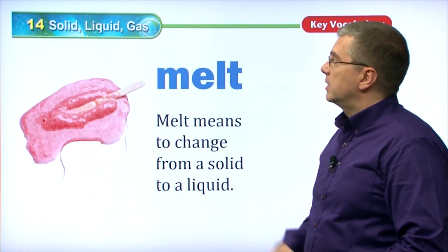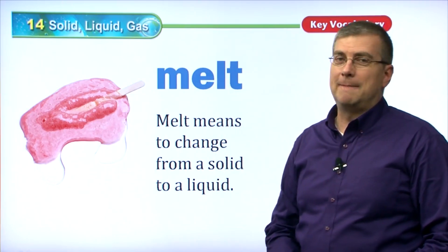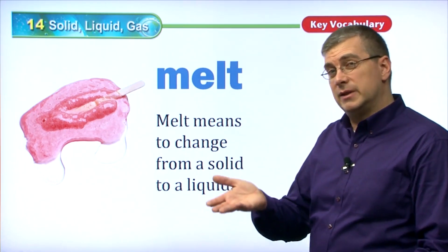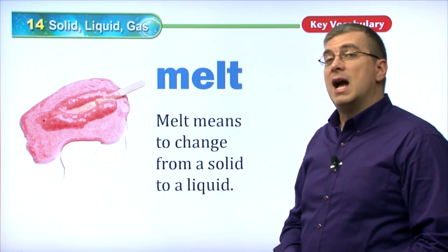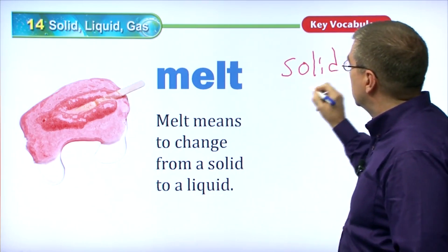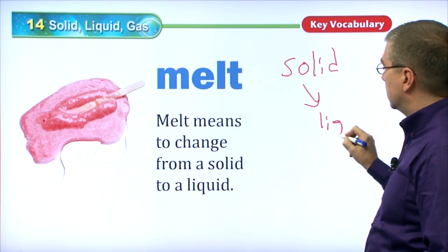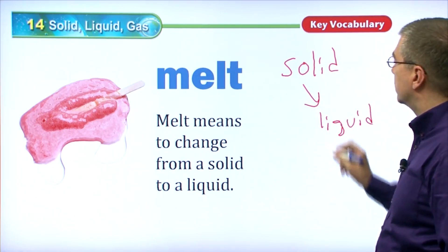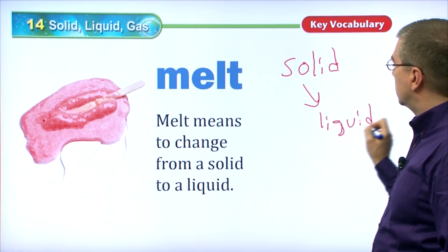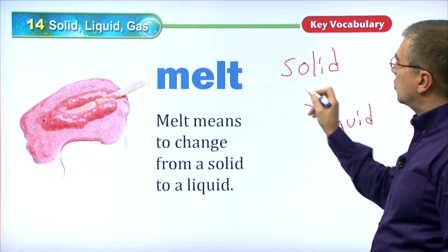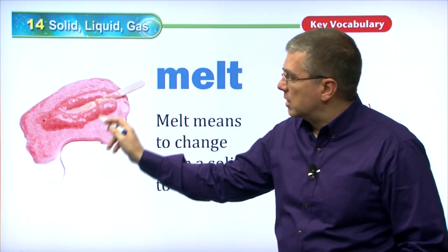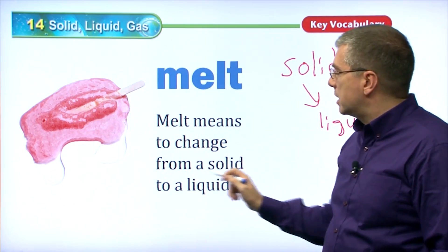Melt. Now here's another word. We talked about freeze — the opposite of freeze is to melt. If you have ice and you raise the temperature, the ice changes from a solid to a liquid. So now we are going from a solid to a liquid. We're increasing the temperature of the solid so that it becomes a liquid. Melt means to change from a solid to a liquid.